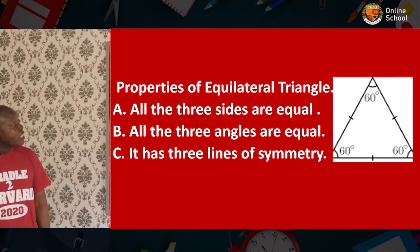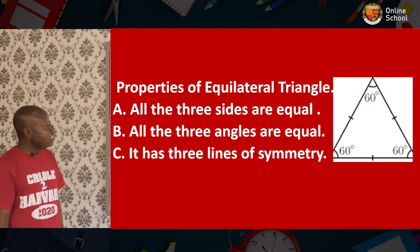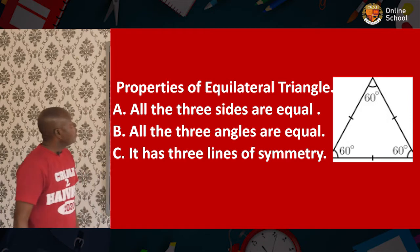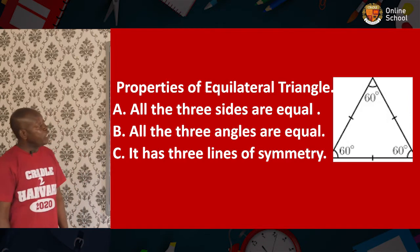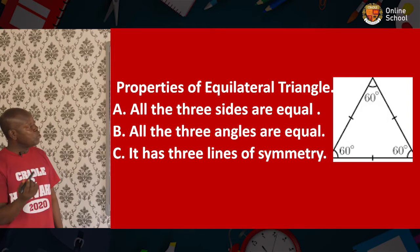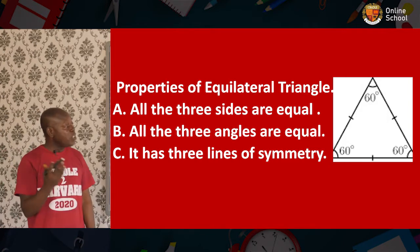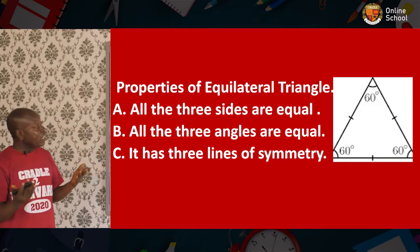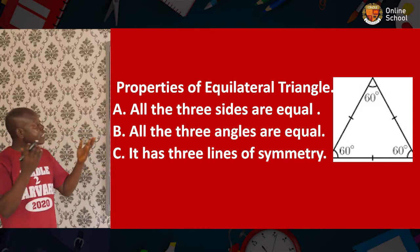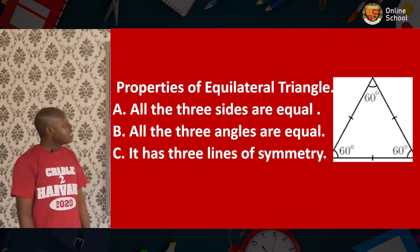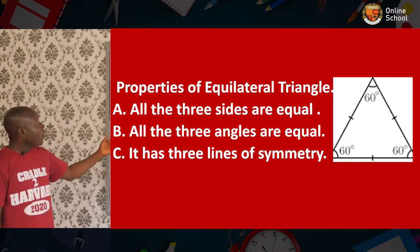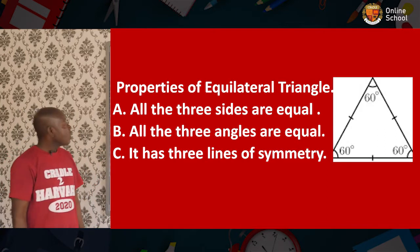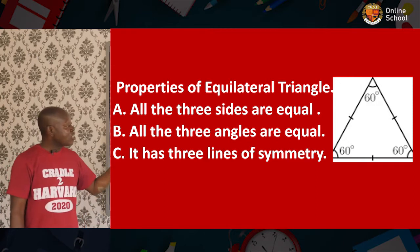The first is the equilateral triangle — you can see the diagram here. Look at the properties so that when you see an equilateral triangle, you should be able to identify it anywhere. An equilateral triangle has all three sides equal and all three angles equal. It also has three lines of symmetry.